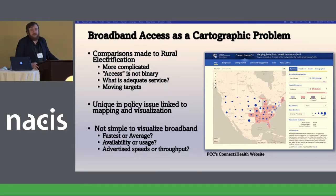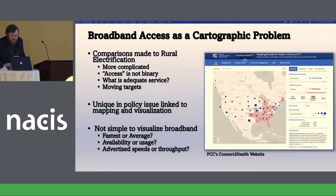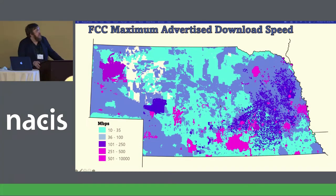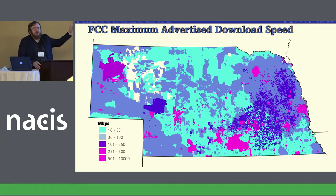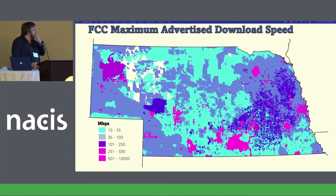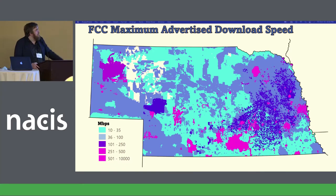And there's advertised speed versus throughput — there's quite a bit of difference between those two. This is just Nebraska, from the Form 477 data. This is the advertised speeds. Of course, everyone here says they meet the definition of broadband — they always claim they do, because they can get subsidized if they do. In south-central Nebraska, there's a large blob — that's actually a rural area where a local fiber company came about about seven or eight years ago.